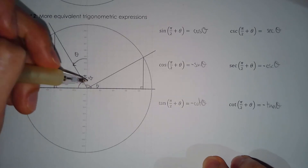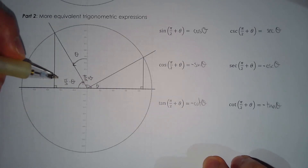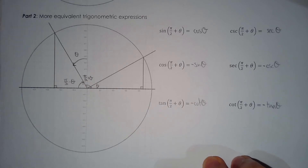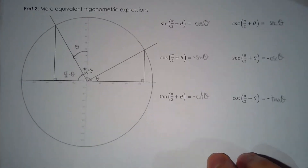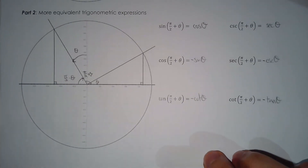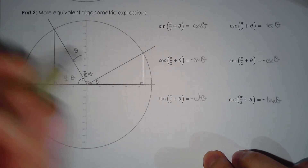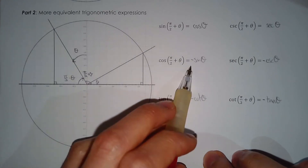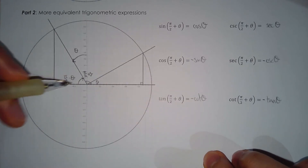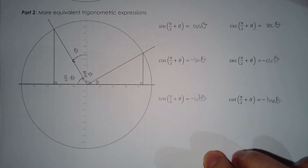The key idea is: if the angle is not in the first quadrant, find the reference angle. You then have two choices. If the reference angle is pi over two minus theta, switch to the complementary trig function. If the reference angle is theta, keep the same trig function — which we'll see next.